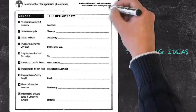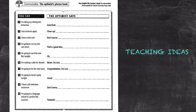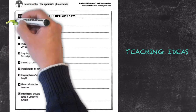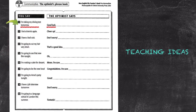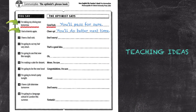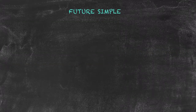Now we'll look at teaching ideas for the future simple tense. The future simple can be used for threats, promises, or predictions. Here we have a pair activity: one student has a prompt to say something and the other responds with a comment using the future simple. For example: 'I'm taking my driving test tomorrow.' 'Good luck, you'll pass for sure!' Or: 'I lost at tennis again.' 'Cheer up, you'll do better next time.' This is followed by feedback.